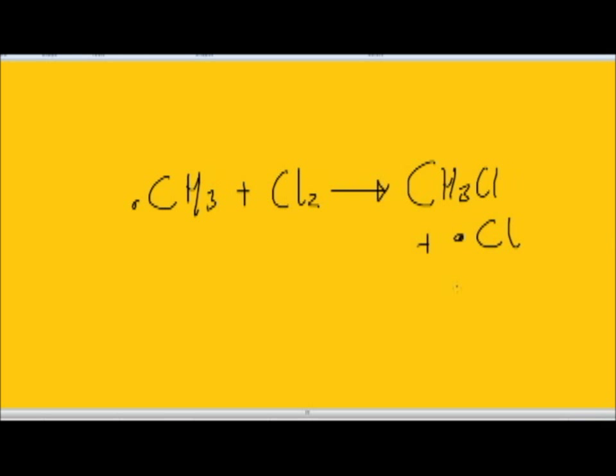The chlorine radical is a catalyst in this reaction because it's present in the first propagation step and reproduced after the second propagation step. So this cancels out in the overall reaction, which is to recap: methane plus chlorine to form chloromethane and HCl.